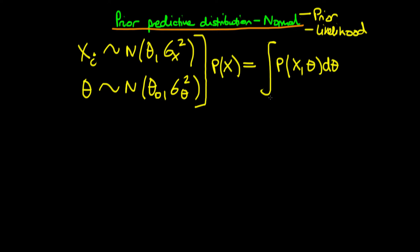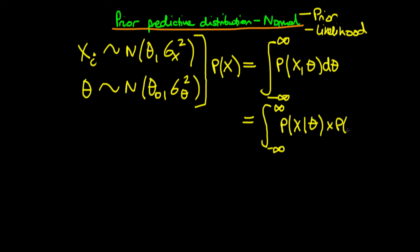We integrate from minus infinity to plus infinity. Furthermore, we know by the nature of this joint distribution that we can rewrite this as just being the integral from minus infinity to plus infinity of the probability distribution of x conditional on theta, times the probability of theta, integrated over theta. So this first part of the formula is simply our likelihood, whereas this second part is our prior distribution.